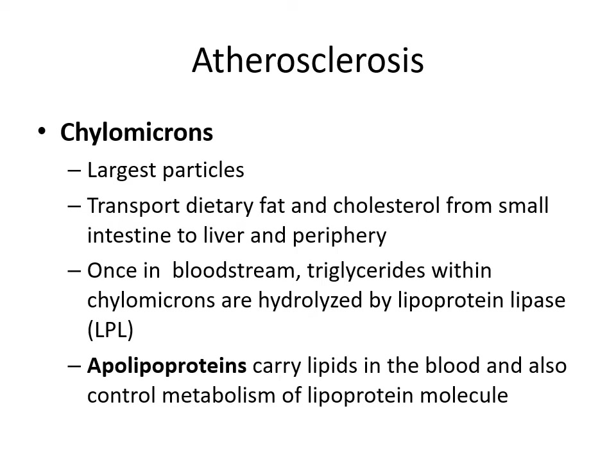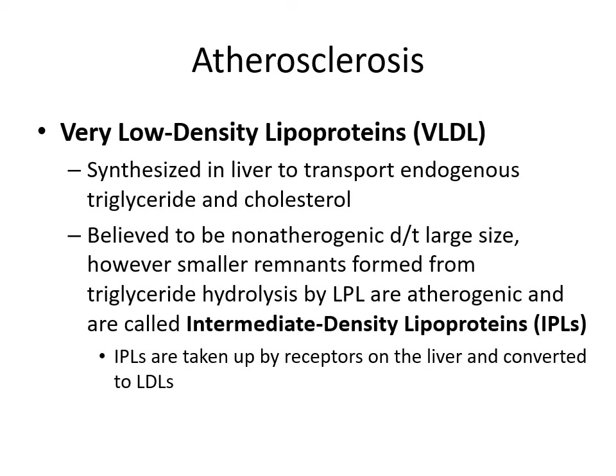Chylomicrons are our largest particles. They transport dietary fat and cholesterol from the small intestine to the liver and the periphery. Once in the bloodstream, triglycerides within chylomicrons are hydrolyzed by lipoprotein lipase. Apolipoproteins carry lipids in the blood and also control the metabolism of the lipoprotein molecule. Very low density lipoproteins are synthesized in the liver to transport endogenous triglyceride and cholesterol. These are believed to be non-atherogenic due to their large size. However, smaller remnants formed from triglyceride hydrolysis by lipoprotein lipase are atherogenic and are called intermediate density lipoproteins. IDLs are taken up by receptors on the liver and converted to LDLs.